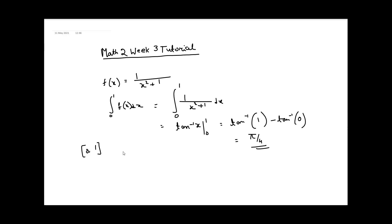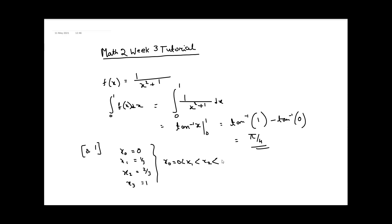Now if I divide this interval [0, 1] into 3 sub-intervals, that is x naught is 0, x1 is 1/3, x2 is 2/3, and x3 is 1. So the condition x0 < x1 < x2 < x3 = 1 is satisfied, and delta x is 1/3 for each sub-interval.